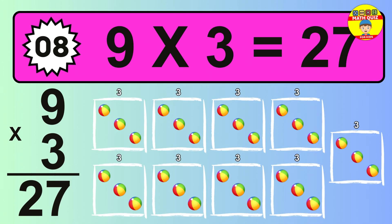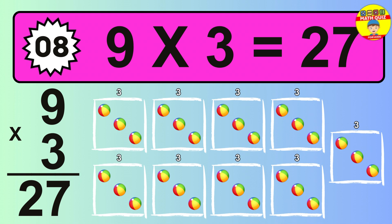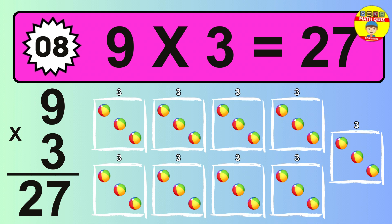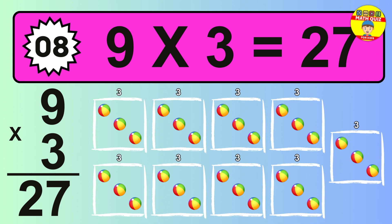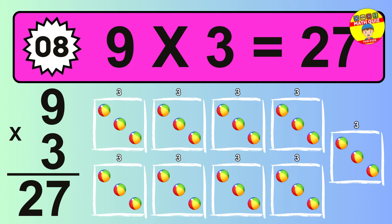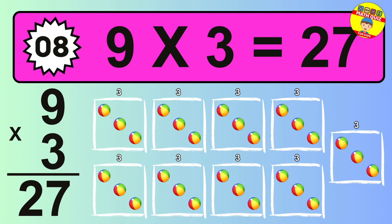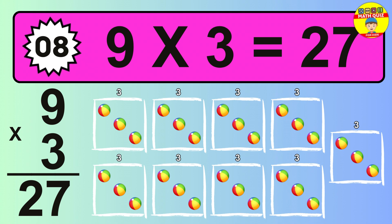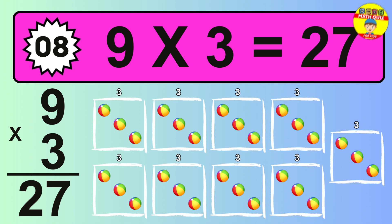The answer is 9 times 3 is 27. To calculate, we have 9 groups with 3 balls each one. So, how many balls do we have? 27 balls.